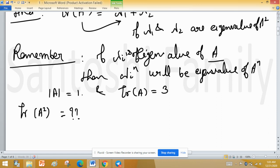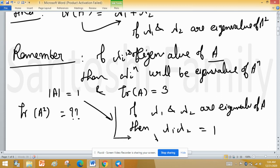If lambda 1 and lambda 2 are eigenvalues of A, then lambda 1 into lambda 2 product, the determinant, can be written in terms of eigenvalues by product equal to 1, and trace can be written as the sum equal to 3.